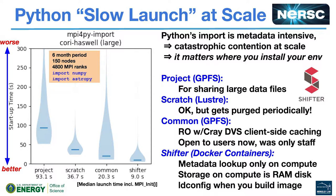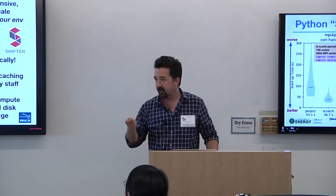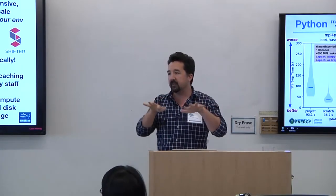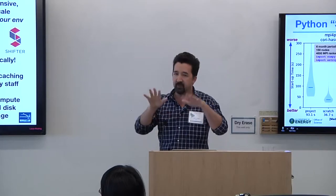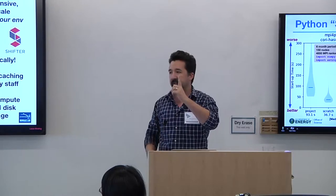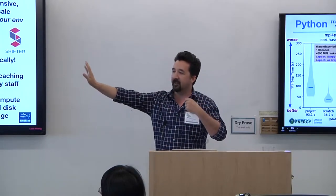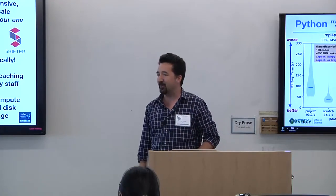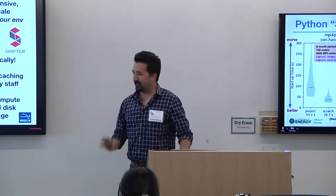Python's import mechanism is really metadata intensive. Any time you do 'import numpy', it goes through the whole file system and your whole Python path trying to open libraries everywhere. If you have 100 MPI ranks, they're all going to do that at the same time. Those requests go to a single metadata server — your application is going to spend a half hour doing 'import numpy'. So you don't want to do that.